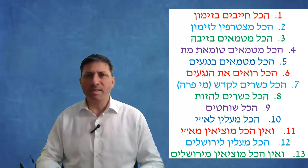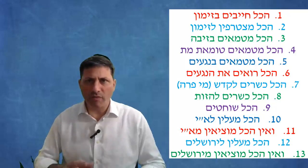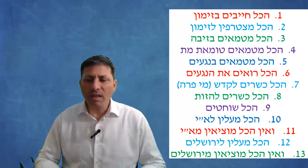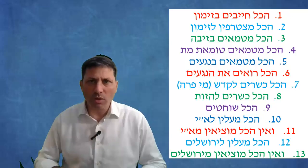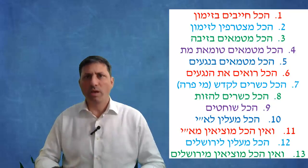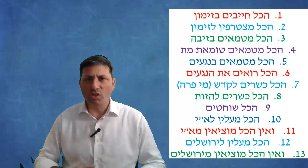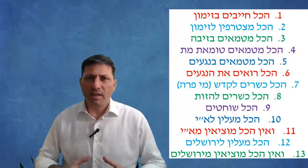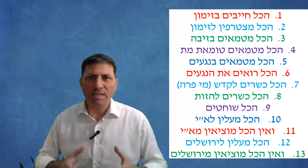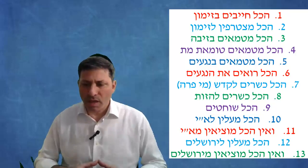It says in the Mishnah hakol mitamei b'ziva - everybody has tumas zava. What does it come to include? Even a baby that's a day old is included. Either we learn it from the words ish ish or simply the fact that the Torah says zachar nekeva and the Torah doesn't limit it to an age.